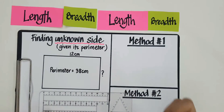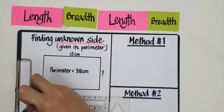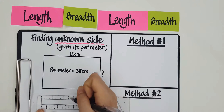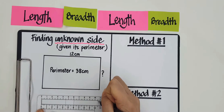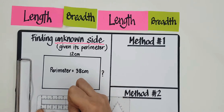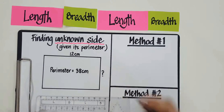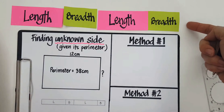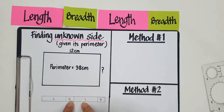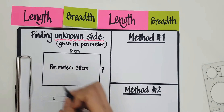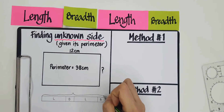I'm going to draw the parameter here. So this is going to be the breadth, the length, the length, the breadth. I've just translated it to look like a bar model, and I'm going to label this whole thing as the parameter.